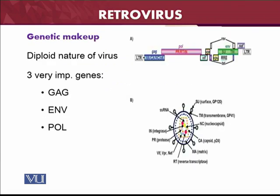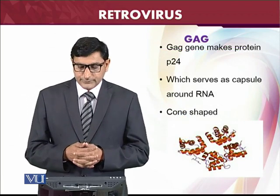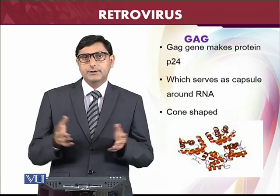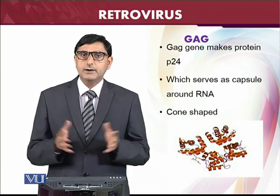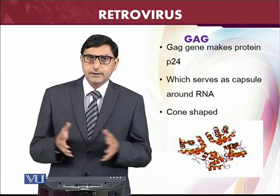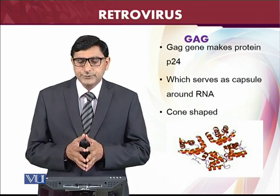The genetic makeup of the virus involves three very important genes which encode different proteins: the gag, the envelope, and the pol genes. The gag genes produce protein p24, which is involved in the capsid — the capsule around the RNA. These are cone-shaped proteins that form the capsid structure.